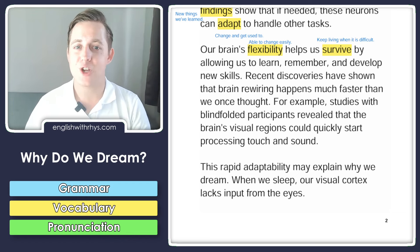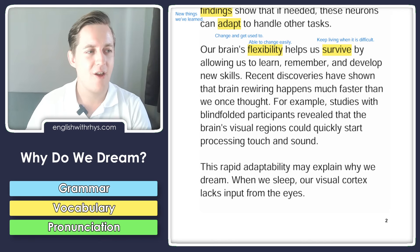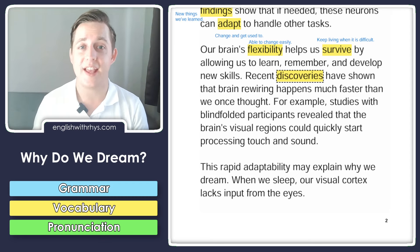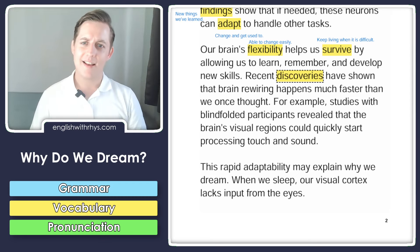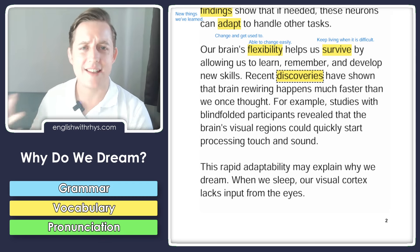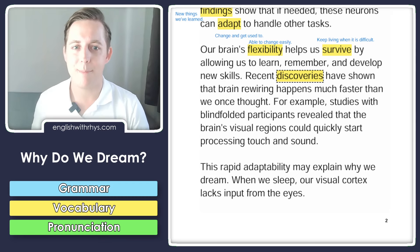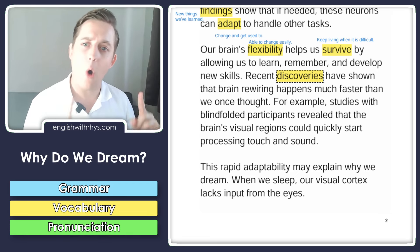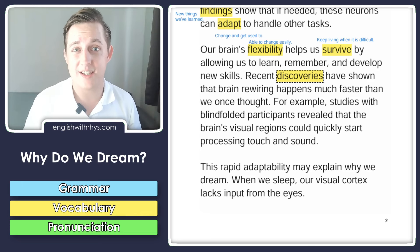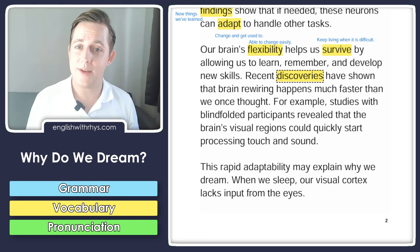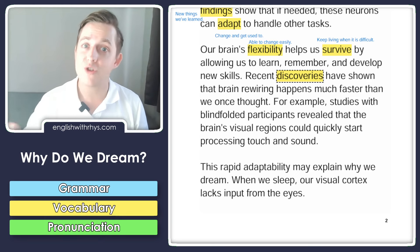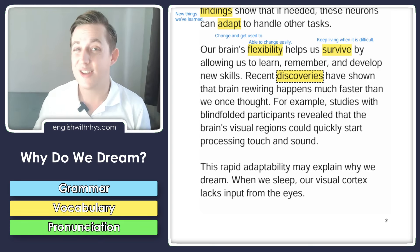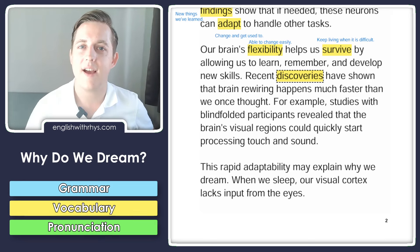Recent discoveries have shown that brain rewiring happens much faster than we once thought. 'Discoveries' are new things you have learned — like a finding. For example: the scientists made some fantastic discoveries in the lab. A discovery can be new for all humans, or it can be about you — things you didn't know before. Maybe you are making some discoveries watching this video.